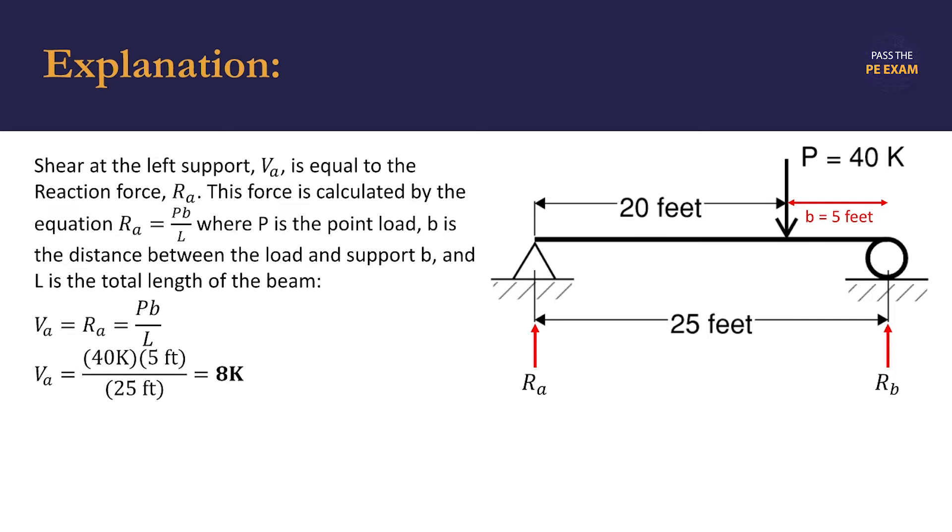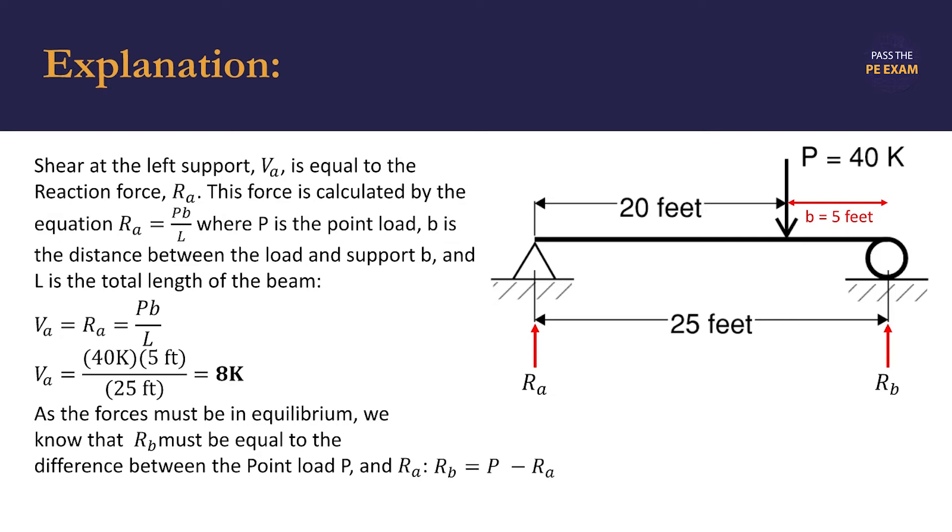We could do the same calculation for point B, but since forces must be in equilibrium and this is a simple problem, the reactionary force at support B equals the difference between the point load P and the force at A. Subtracting 8 kips from 40 kips, we find that the force at support B is 32 kips.